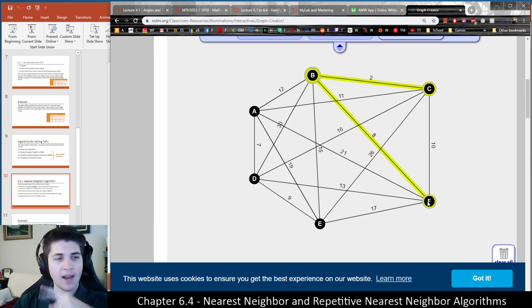Now that we're at F, we're going to travel to the next nearest neighbor, which would be either A, D, or E. The cheapest of those appears to be D, F to D, 13, as opposed to 17 or 21.